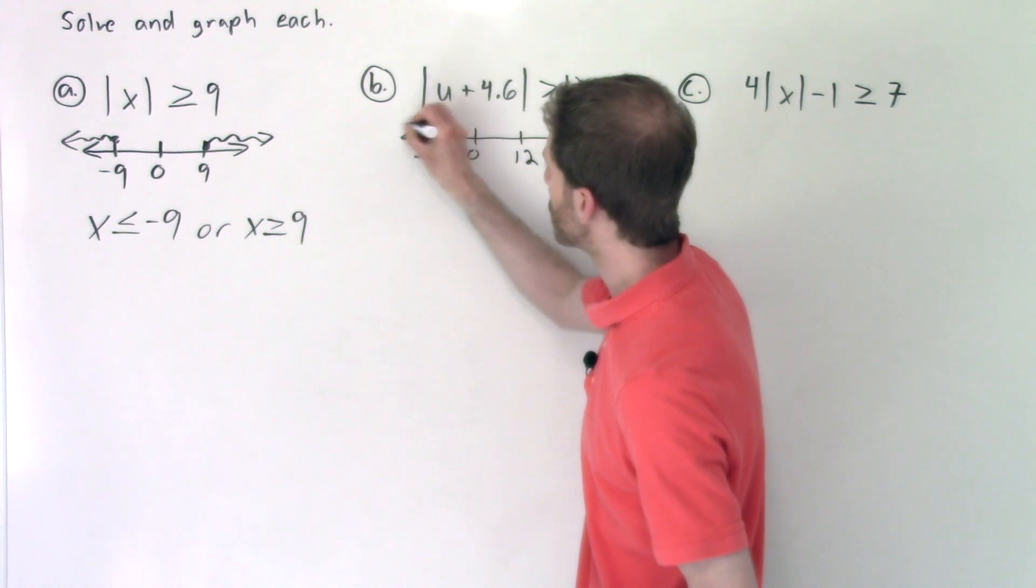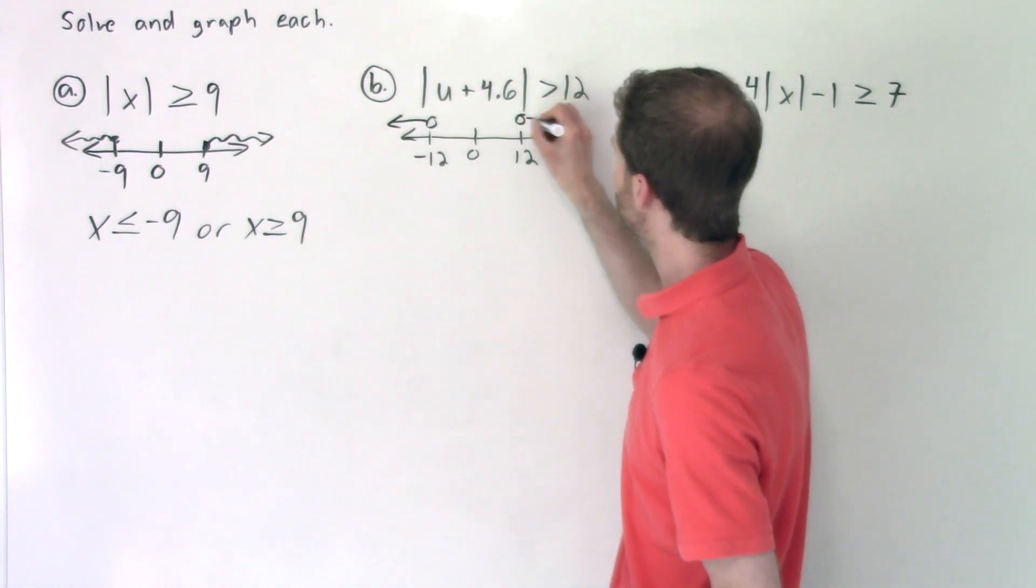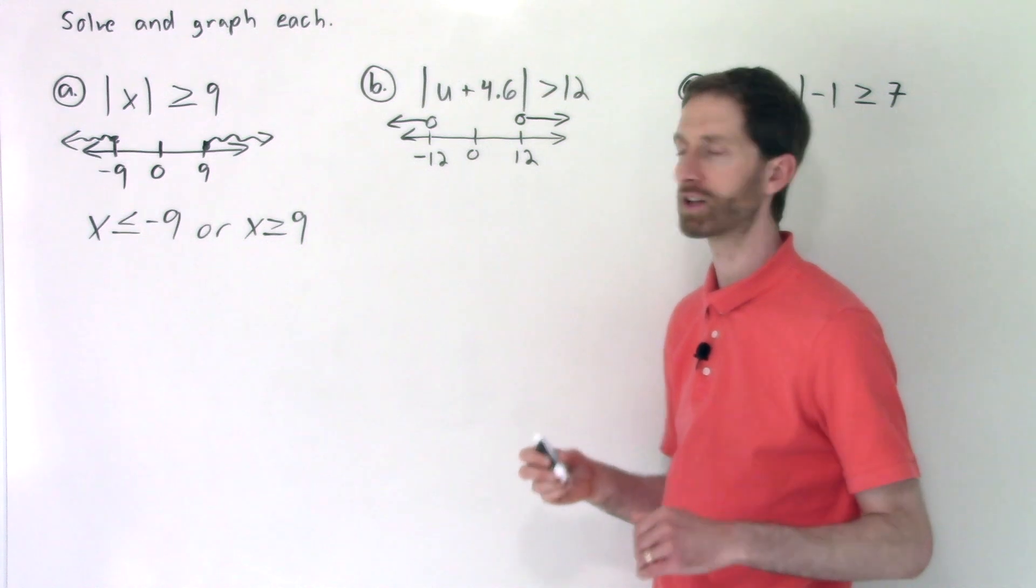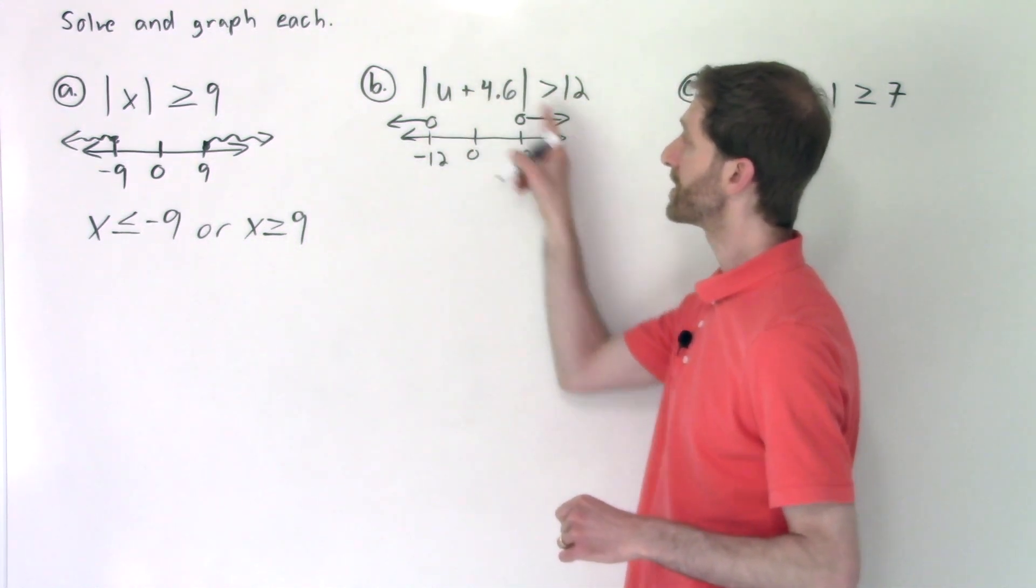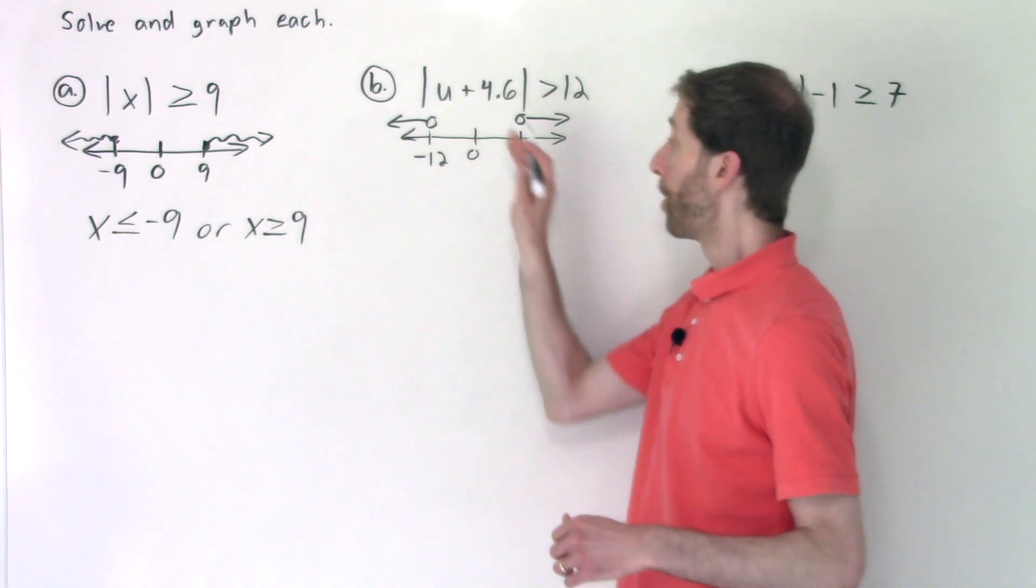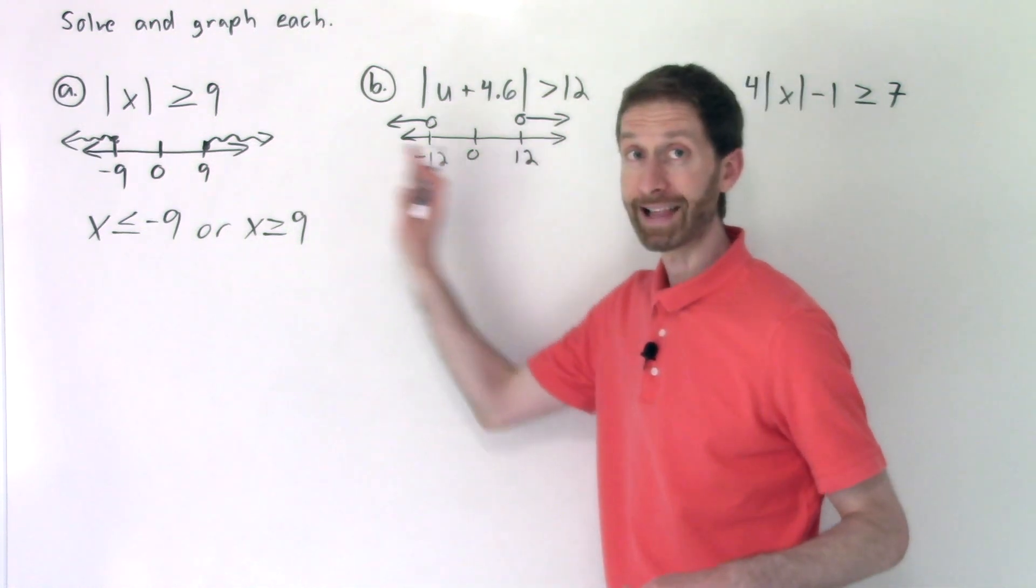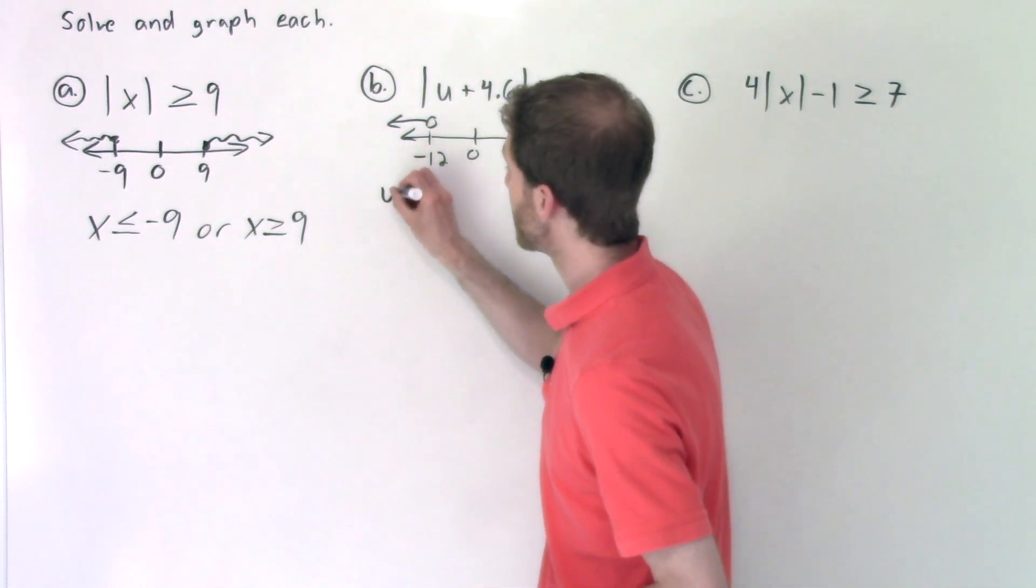So it's an open circle to the left, open circle to the right, and I'm shading it above that just so you can see it clearly. So that means that U plus 4.6 fits this graph's inequality. It's either more than 12 this way or less than negative 12 that way. So we're going to write that down.